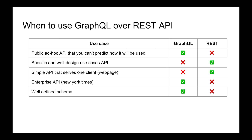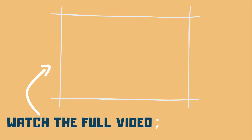If an attacker knows the schema, they might know that querying certain fields will cause a full table scan — for example, if there are no indexes on those fields. They can craft a very expensive query that causes contention and brings down your server, and they can repeat that query multiple times to execute a denial-of-service attack.